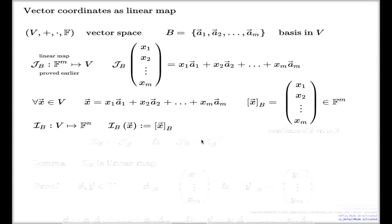It is a mapping. We took a vector and we return an m-tuple. I'm going to give a name to this mapping. I'm going to call it I sub B. It's the mapping which takes a vector and returns the m-tuples of associated coordinates. Of course, both of these mappings depend on the basis.